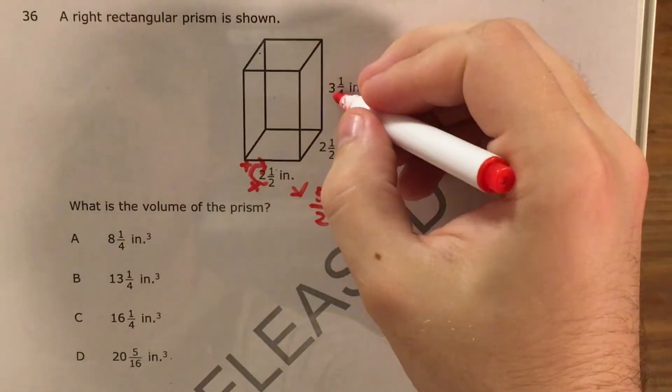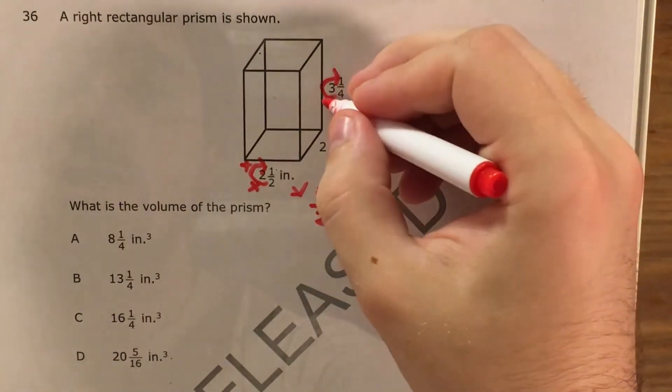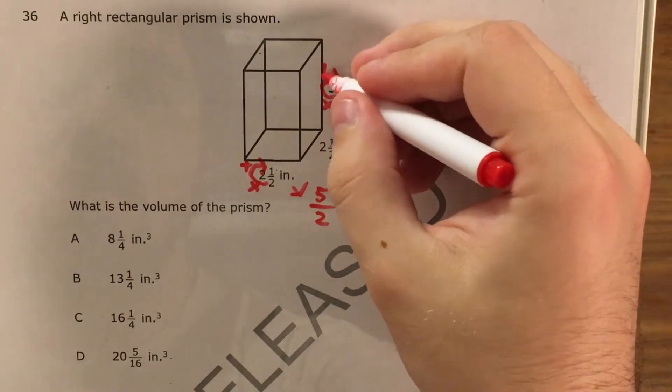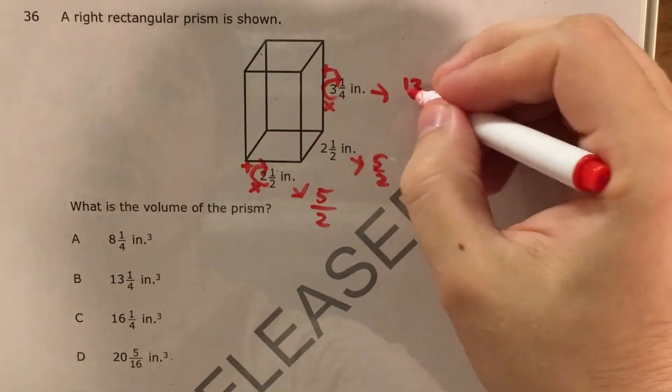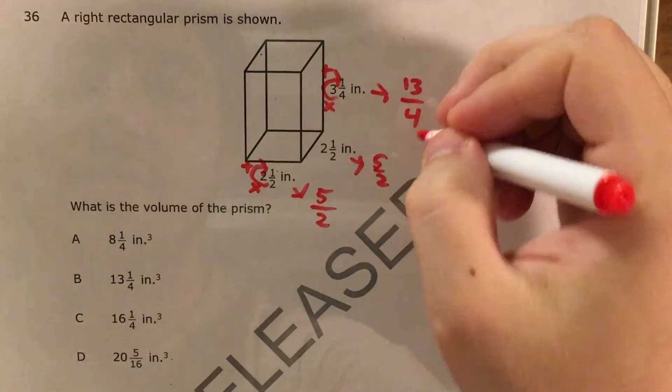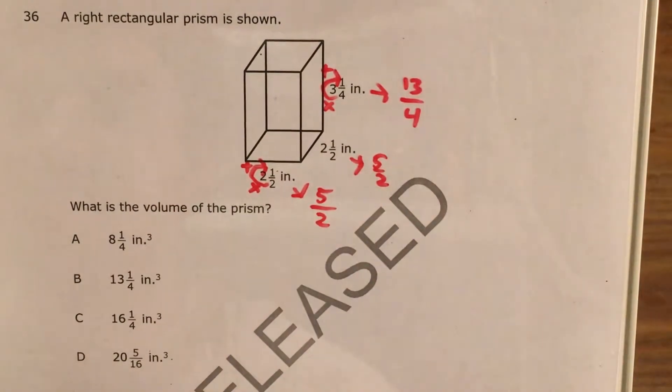Same thing for this 2½. Now I come to 3¼. I use my left to right swoosh. 4 times 3 is 12, plus 1 is 13. That's still 13 fourths.